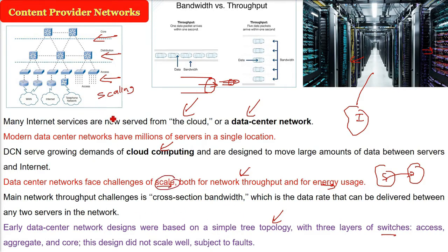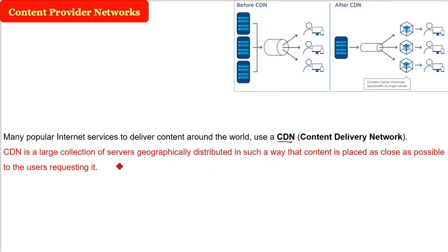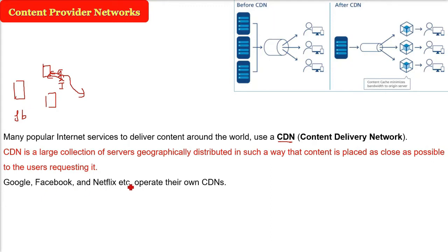These are the situations we need to know about content provided networks or DCN. Whenever we talk about content delivery networks, various popular internet services deliver their content around the world — like Google, Netflix, and Amazon Prime — using CDN, content delivery network. This CDN is a collection of various servers that are globally distributed, so that the client requesting content must get it as soon as possible, as near to them as possible, as if getting it from their own internet service provider. Google, Facebook, Netflix, Amazon Prime, etc., operate their own content delivery networks.